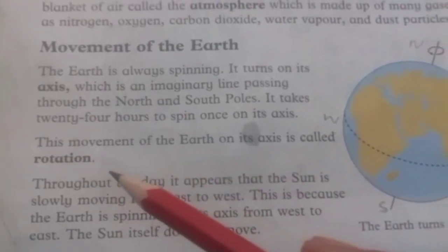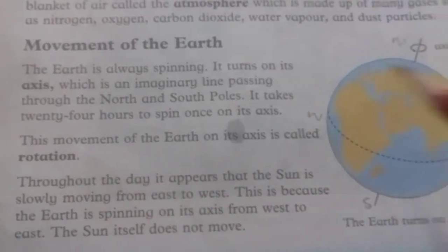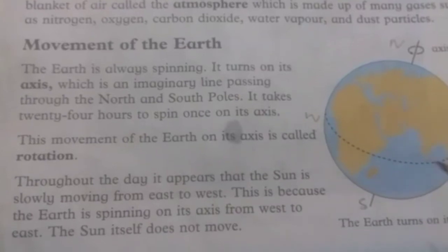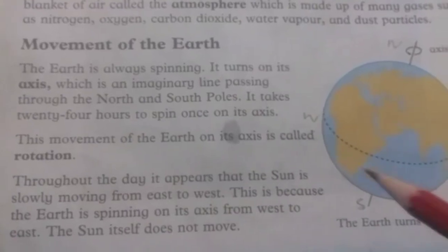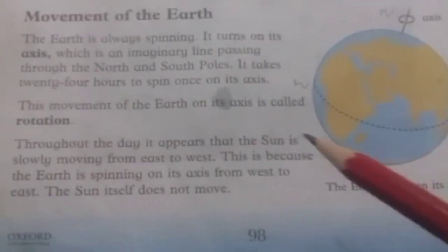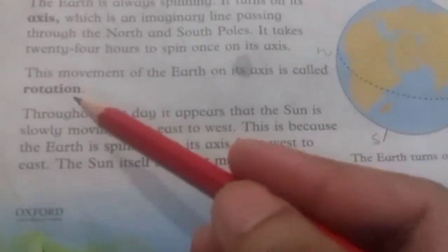It takes 24 hours to spin once on its axis. This movement of the earth on its axis is called rotation. Its movement on its axis is also called rotation — it is called rotation.